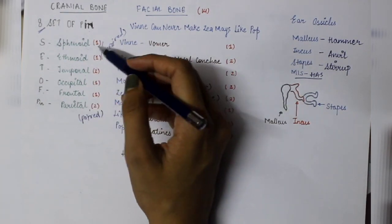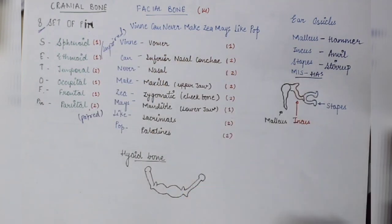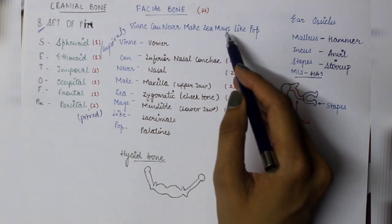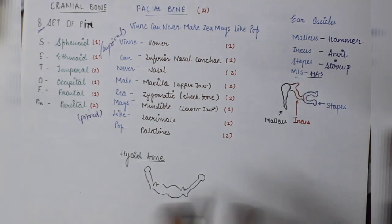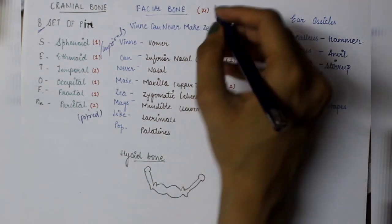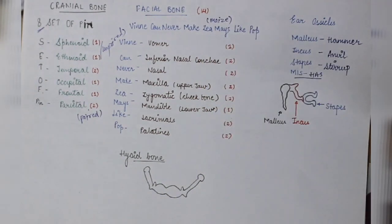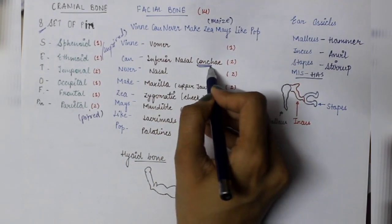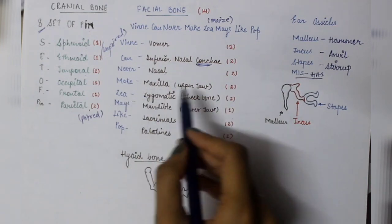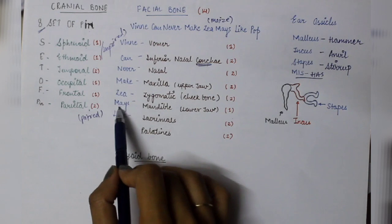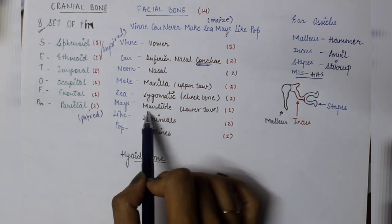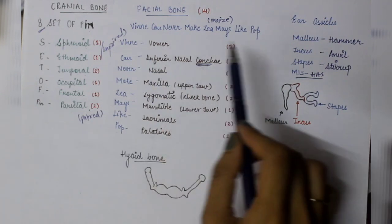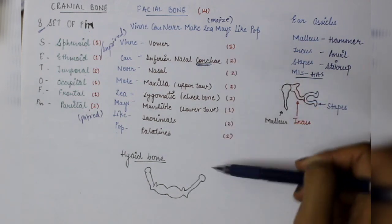If we look at facial bones, then what is the mnemonic? Winnie can never make zia maze like pop. So Winnie is Vomer, Ken is Inferior Nasal Conchae, Never is Nasal, Make is Maxilla which is our upper jaw, Zia is Zygomatic cheekbone, Maze is Mandible, L is Lacrimal, and Pop is Palatines. Vomer is single and mandible is single. The rest are paired.